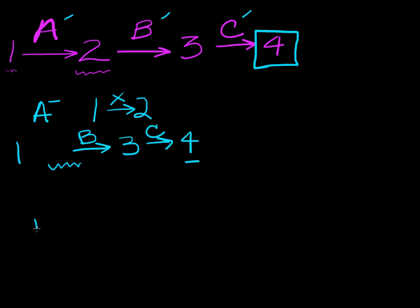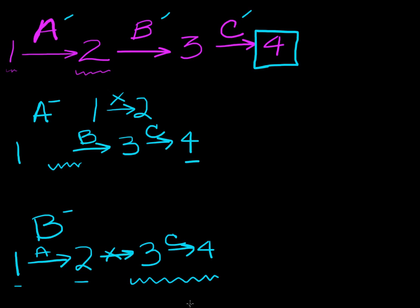So what happens if we don't have any B? Let's look at B minus. Well now we still can make one into two because enzyme A works fine but we cannot make two into three and so therefore we also can't make any four. So we can have one and two around in the cell but we won't be able to make three or four even though enzyme C still works.